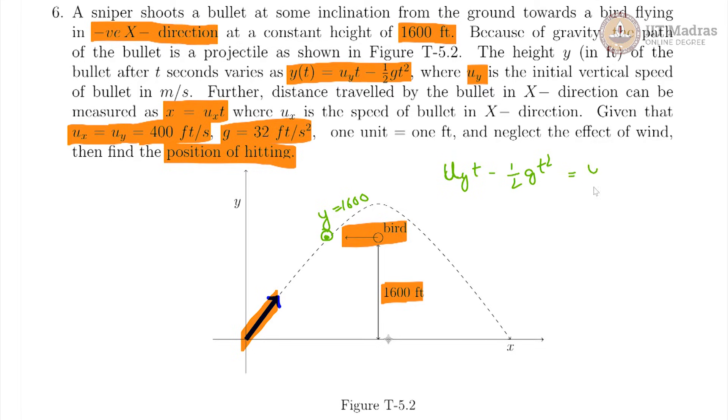u_y times t minus half g is equal to y, so we know y is supposed to be 1600 and u_y is 400. So, you get 400t minus half of 32 times t squared.